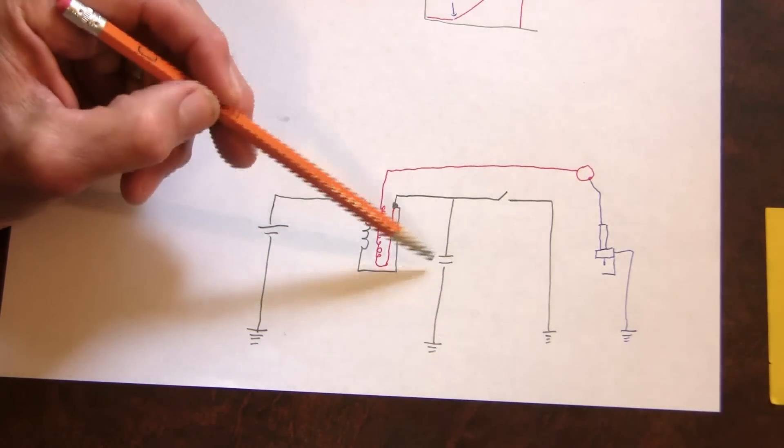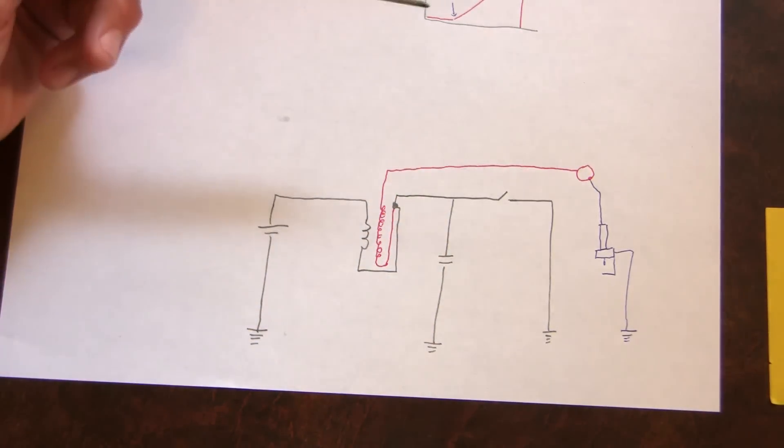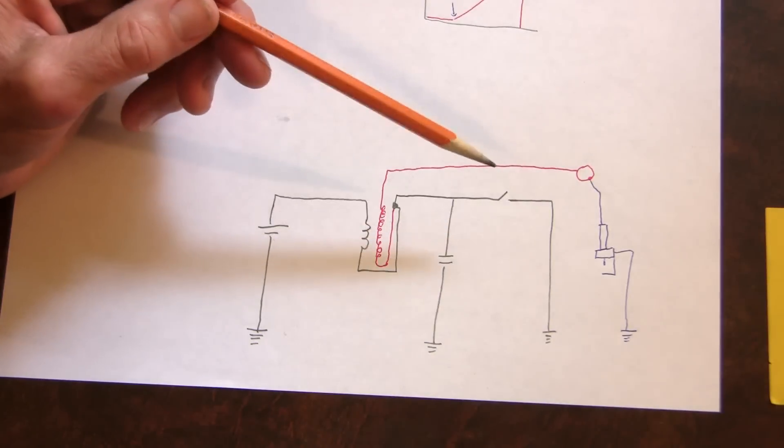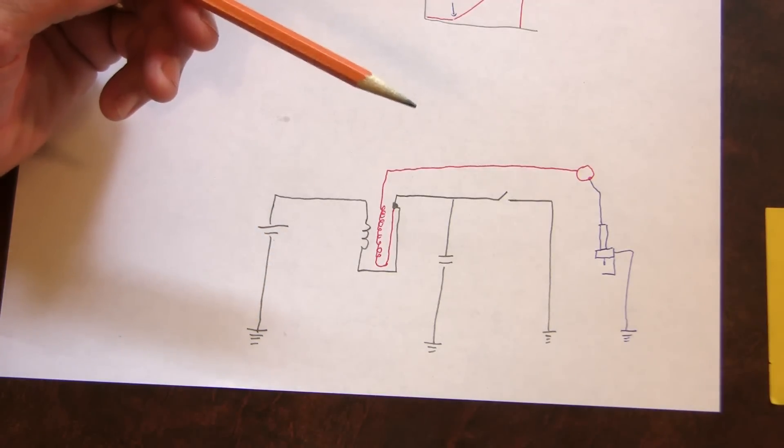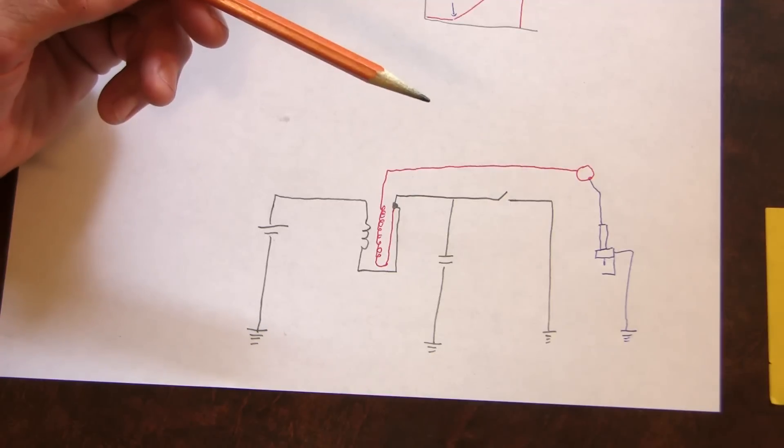The second thing is the capacitor here. The capacitor was added to try and save the points which were getting hammered with back EMF and lots of damaging oscillation sparks. Adding the capacitor smoothed out those oscillations and gave the system a kind of a tune, much like tuning that you get with a crystal radio.